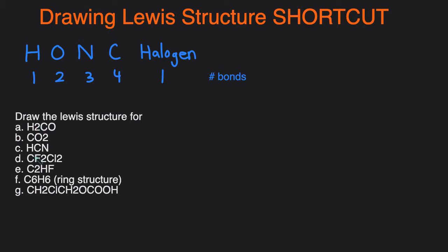We have to draw the Lewis structure of each of these compounds. We'll start with the first one, H2CO. We know that carbon is always going to be in the middle, so I'll put carbon there. Hydrogen likes to form 1 bond, so we'll attach the 2 hydrogens with 1 bond each. We also have oxygen, and it likes to form 2 bonds, so we'll double bond the oxygen. You can see that makes carbon happy because carbon has 4 bonds in total and it wants 4 bonds. Then the last thing we have to do is add the lone pairs — oxygen has 4 electrons here but wants 8, so we'll add 2 more lone pairs.